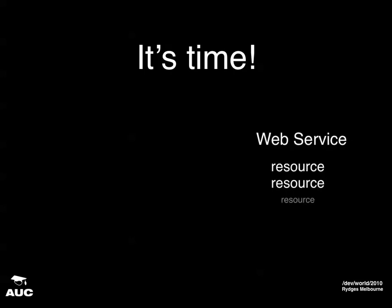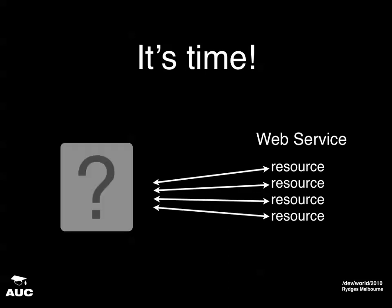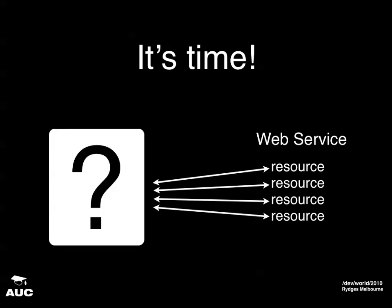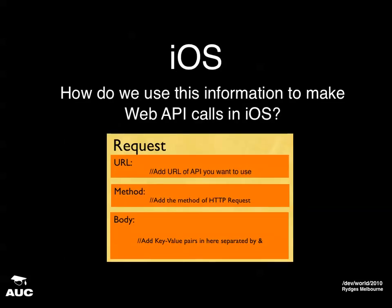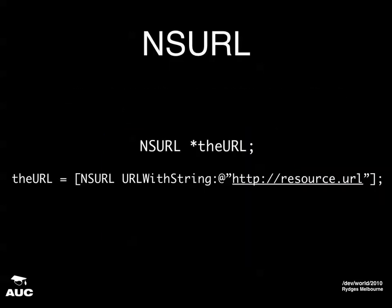Now you know what a web service is, the resources you want to get, and the calls you need to find them. So how do we get that into our app? We start off with an NSURL — that's a class defined for storing URLs. It's pretty simple: you use URLWithString, give it the URL you want, and it stores that for you.